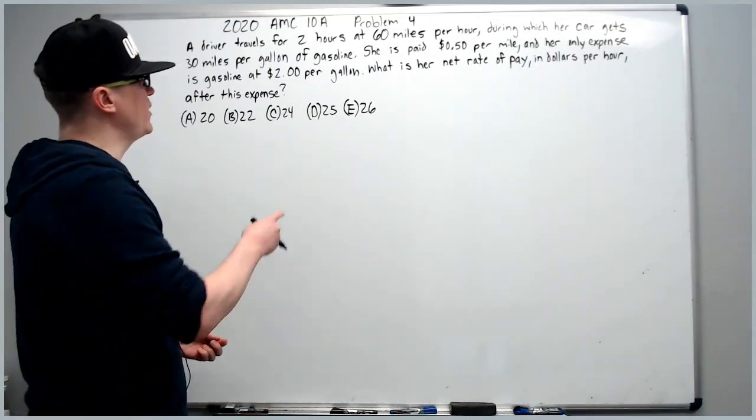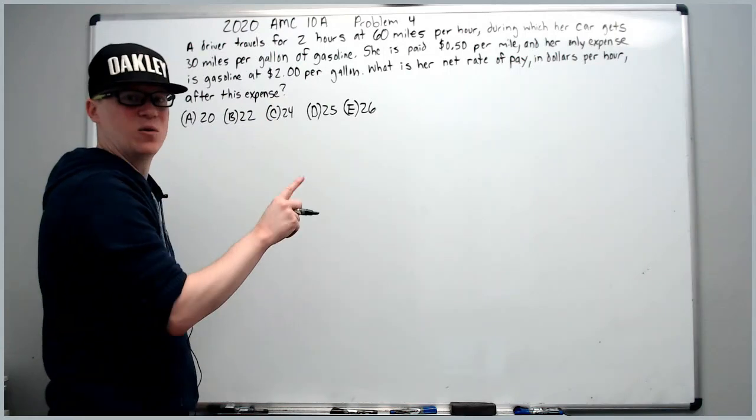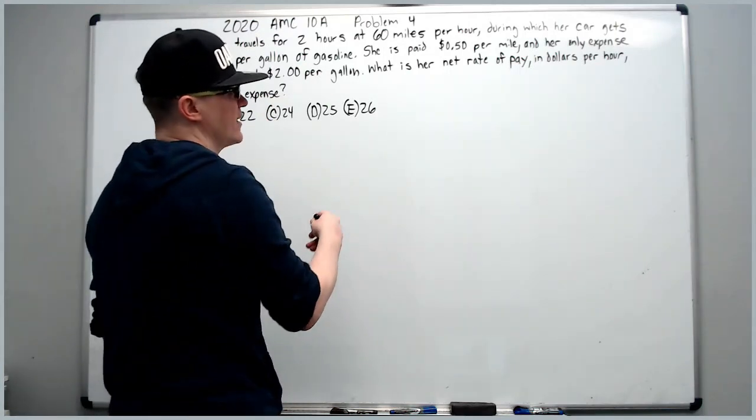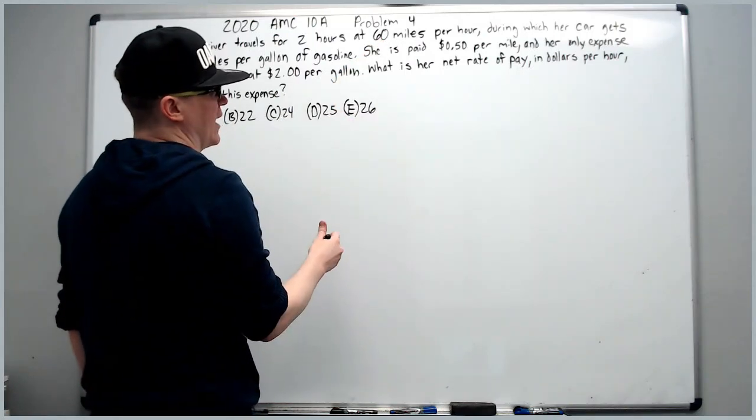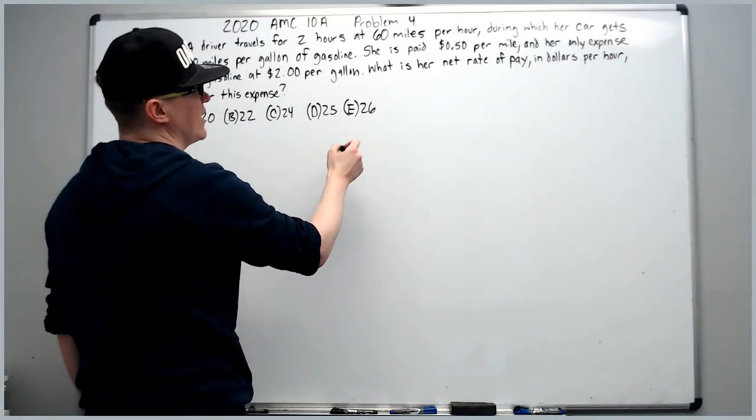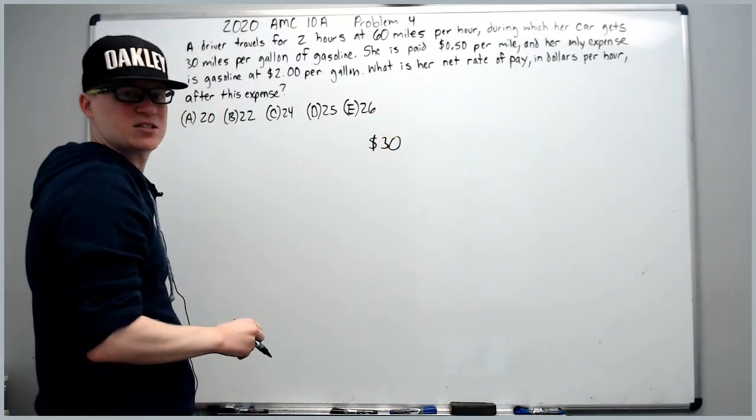So dollars per hour, we don't care she's traveling for two hours. Let's just do one hour and we'll get the correct rate, because it's the same for both hours. At 60 miles per hour, she's going to go 60 miles, and she gets paid 50 cents per mile. So half of 60 is $30.